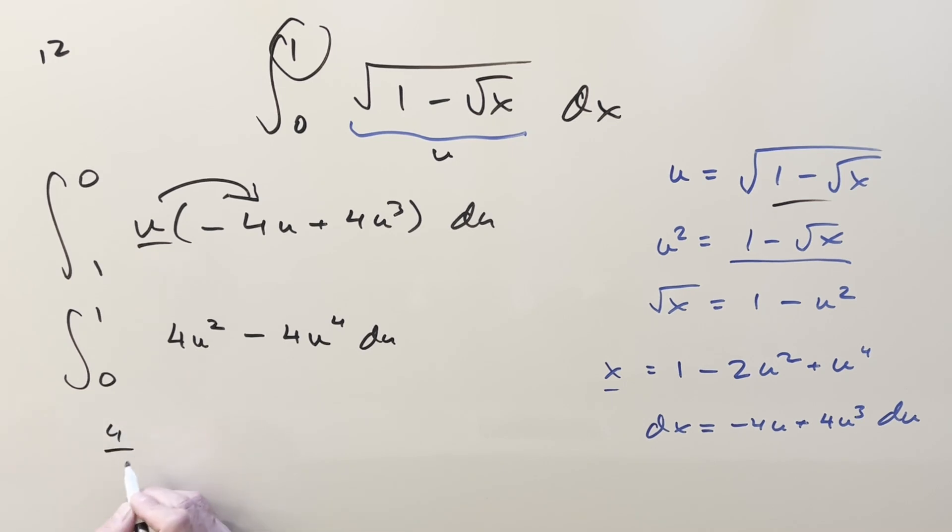Integrate real quick with power rule. We have 4 thirds u cubed minus 4 fifths u to the fifth from 0 to 1. Okay, now clearly, when you plug 0 in, that's going to be a 0 for everything. You plug 1 in, we're just dealing with two fractions here. All that's going to be left is 4 thirds minus 4 fifths.